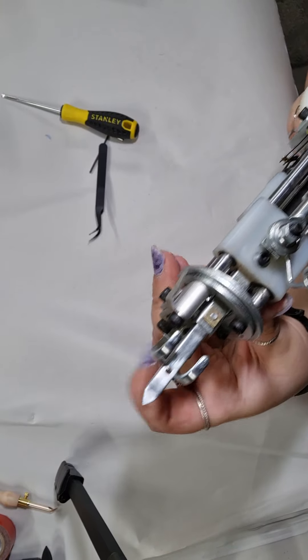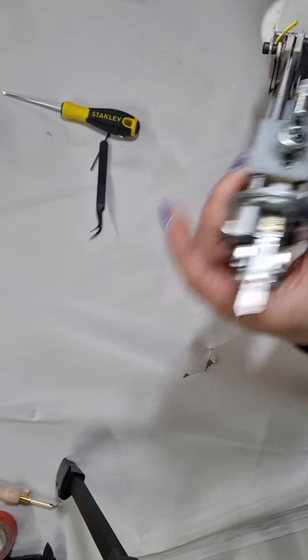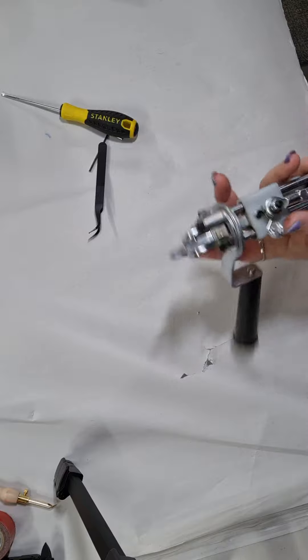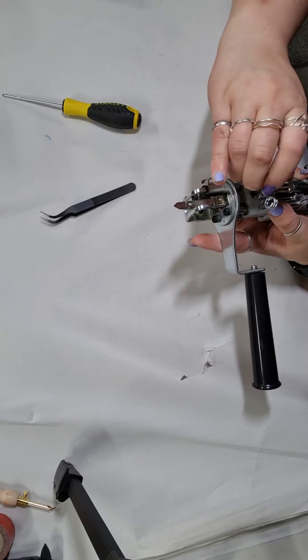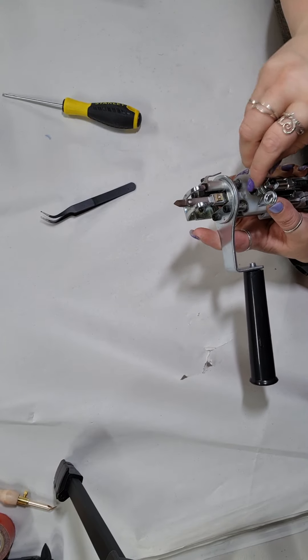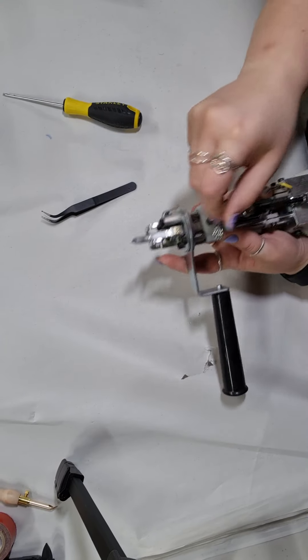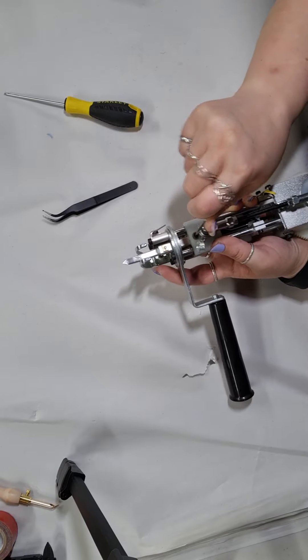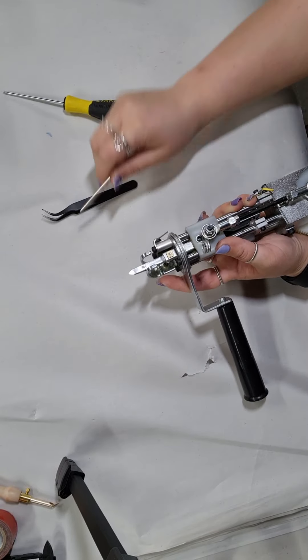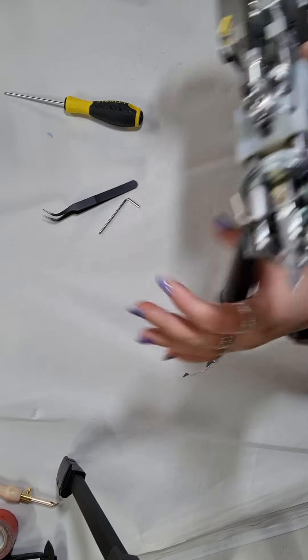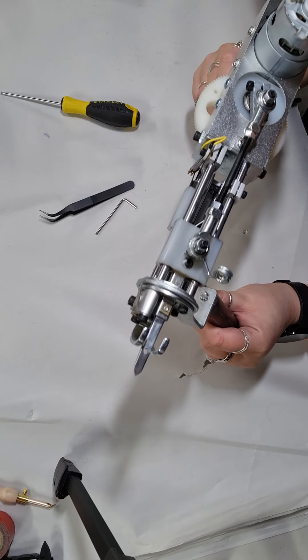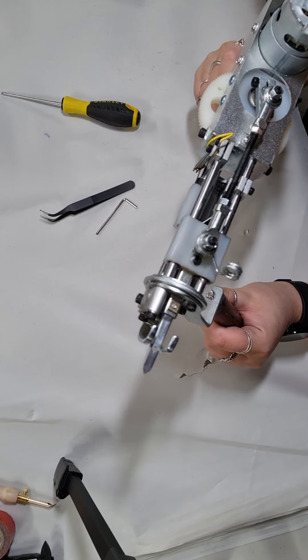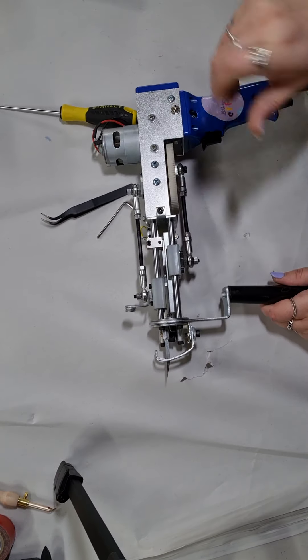We'll quickly tighten this screw up—nice and snug—so that piece is not going to move. And that's how you adjust the hole size of your tufting gun. Easy as! Thank you.